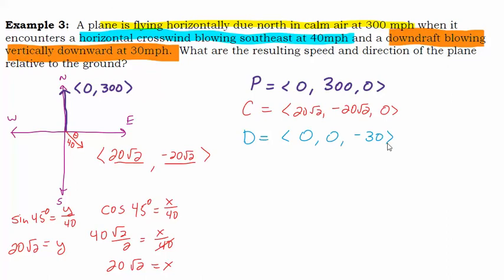If we want to find the actual direction and speed of this plane, it's going to be the sum of all these vectors. Doing the sum is pretty easy—we're just going to add up all the components. So P plus C plus D. If I add up all these components, my x component is 20√2, my y component is 300 minus 20√2, and my z component is -30. So that's the vector that represents the actual path of the plane after it's affected by these two vectors.